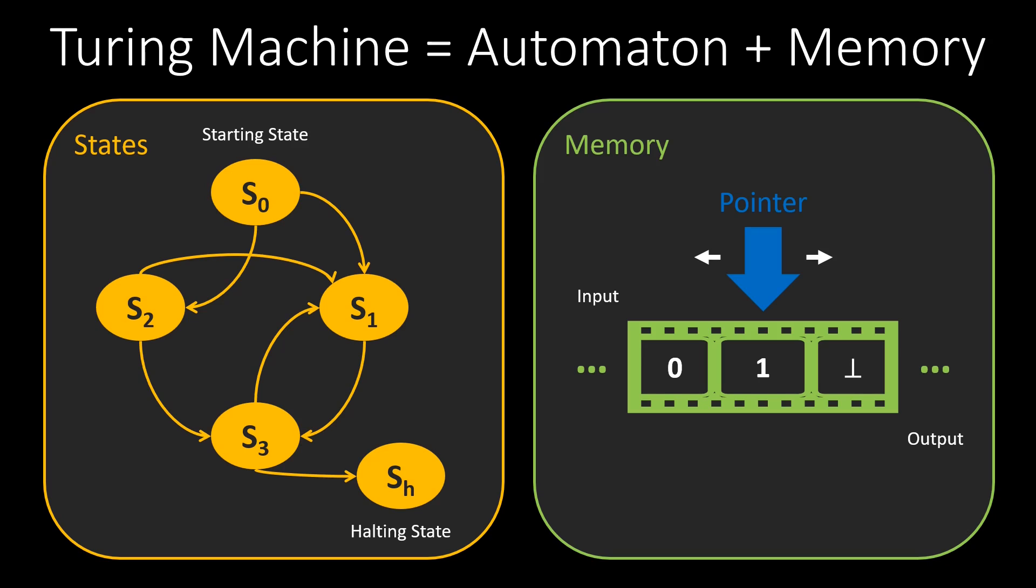Together, these building blocks form the well-known theoretical model of computation called the Turing machine. Although the Turing machine is a model of computation, we can interpret it as a function, since it converts an input to an output. Like a Python program, a Turing machine is not defined for all inputs. A Turing machine can for instance run forever and never halt.